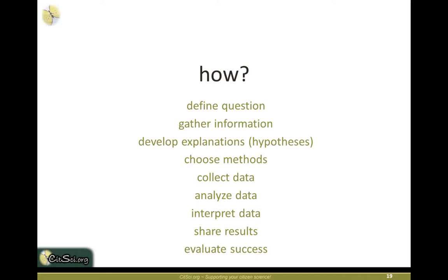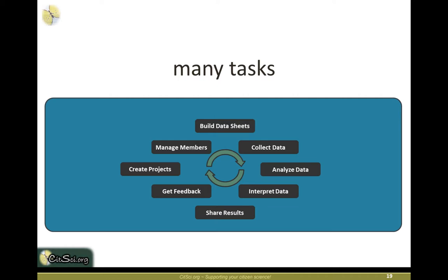For any citizen science project, you need to ask: what is the research question you're trying to answer? How might you gather information to answer that question? What hypotheses might explain what you find? Then choose your methods, collect your data, analyze it, interpret it, share it, and evaluate success. Importantly, evaluation doesn't only belong at the end — formative assessments at the beginning and throughout are critical, as well as summative evaluation to determine whether you met your goals.